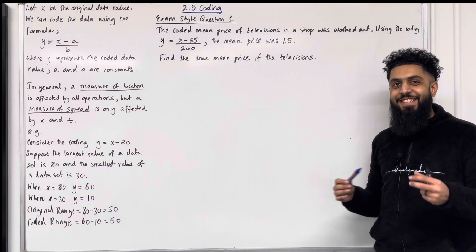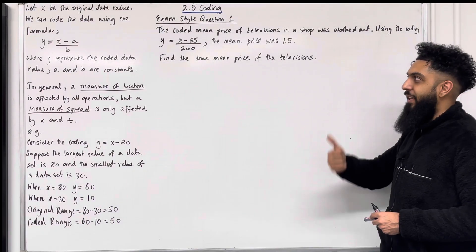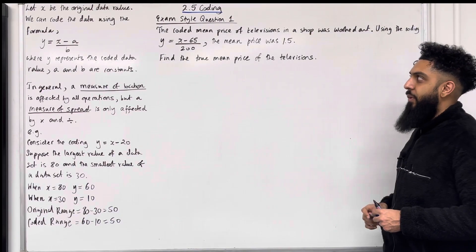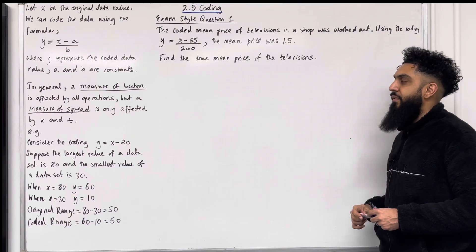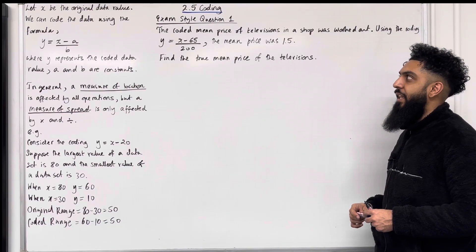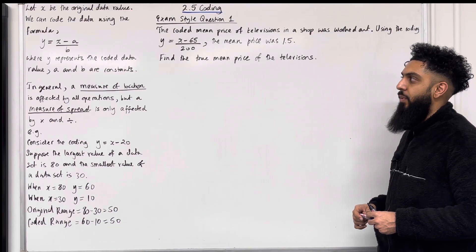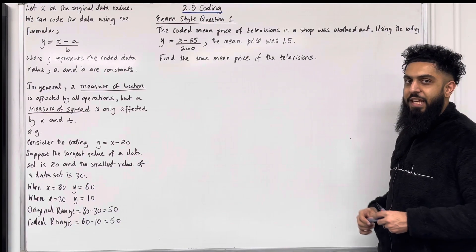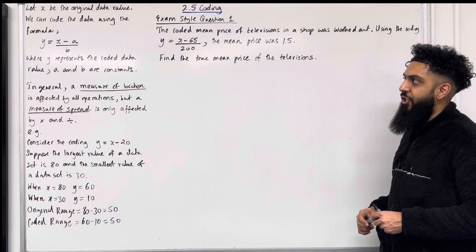Welcome back ladies and gents. In this teaching video I'm looking at 2.5 coding. 2.5 represents chapter 2, section 5 of the Pearson A-level Maths Year 1 textbook. Let's go through the key facts of this section.